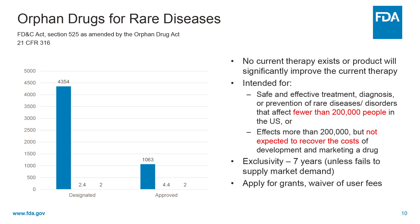The Orphan Drug Act defines a rare disease as a disease or condition that affects less than 200,000 people in the United States. If a drug or biologic is intended to treat more than 200,000 people, but the manufacturer is not expected to recover the development and manufacturing costs, then the FDA may designate it as an orphan drug. Orphan drug status can be very beneficial to manufacturers because it waives the prescription drug user fee. The fee to submit an NDA or BLA was over $3 million for fiscal year 2022. Orphan drug status also gives the manufacturer market exclusivity for seven years.